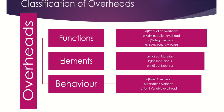Third is semi-variable overhead. Semi-variable overhead is one wherein partially it is fixed and partially it is variable. The cost may be partly constant and partly fluctuate according to the volume of production. Examples include supervisory salaries, depreciation, and repairs and maintenance.